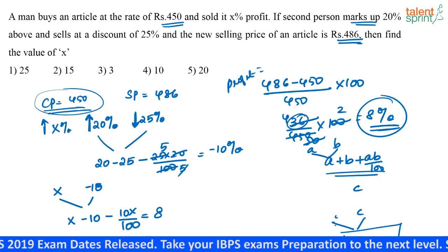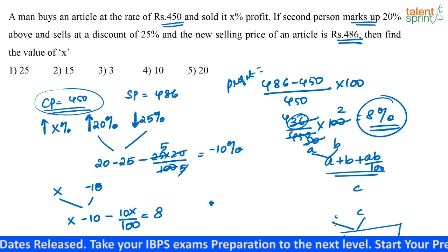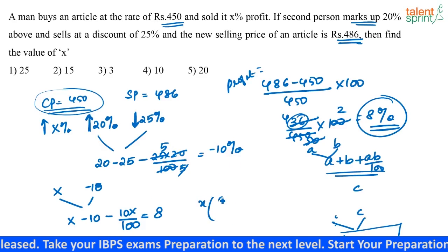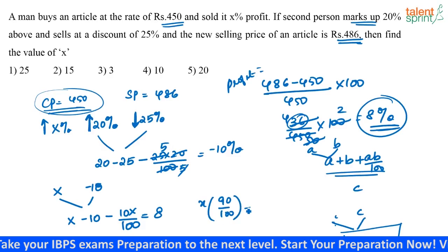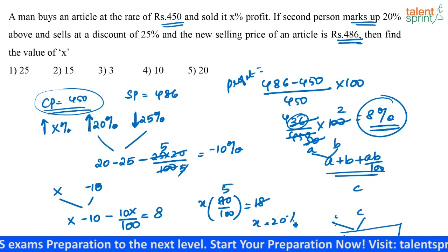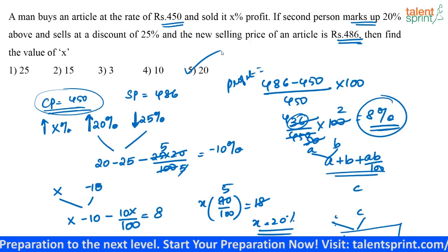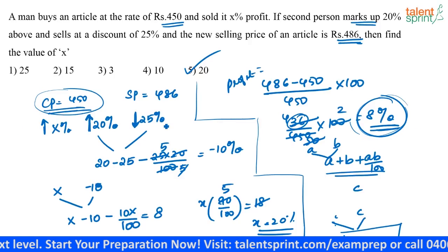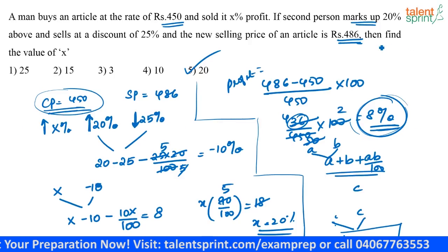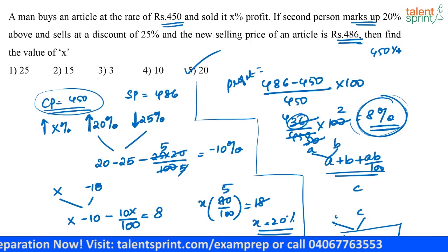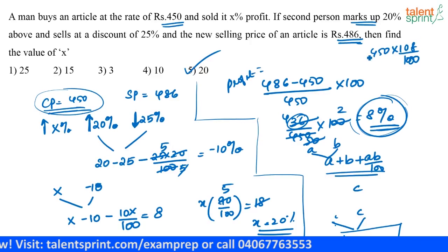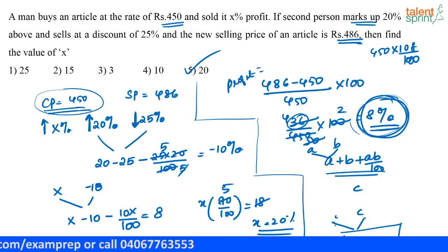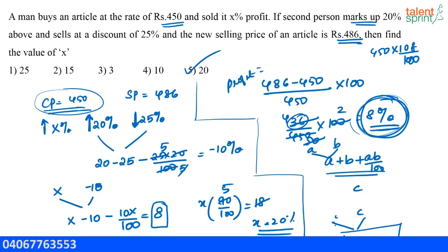Setting the expression equal to 8 and solving, x terms give x into 90 by 100 equals 18, so x equals 20 percentage. The net profit is 8 percentage because we are selling at 450 into 108 by 100, which is 8 percentage extra on 450 — that is why we take the final effective percentage as 8.